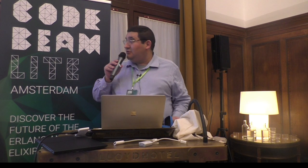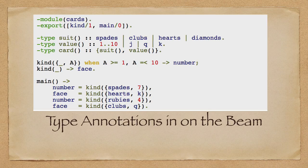Type annotations on the BEAM. By the way, these early examples are from 'Learn You Some Erlang,' so thanks to Fred for putting them all online — I just stole them. Basically everything I'm going to say here also applies to Elixir, using Erlang examples.